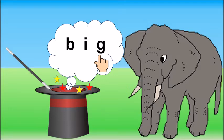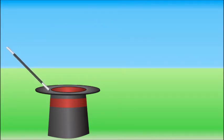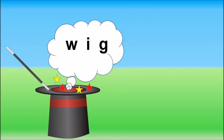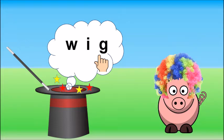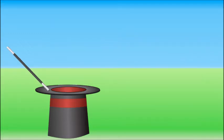Abracadabra gilly gilly choo, show us the next word. W I G, wig. Look children, a wig is on a pig. Wig.